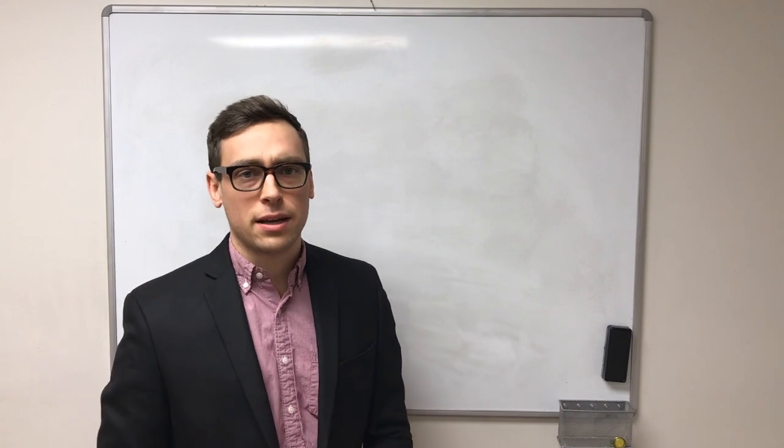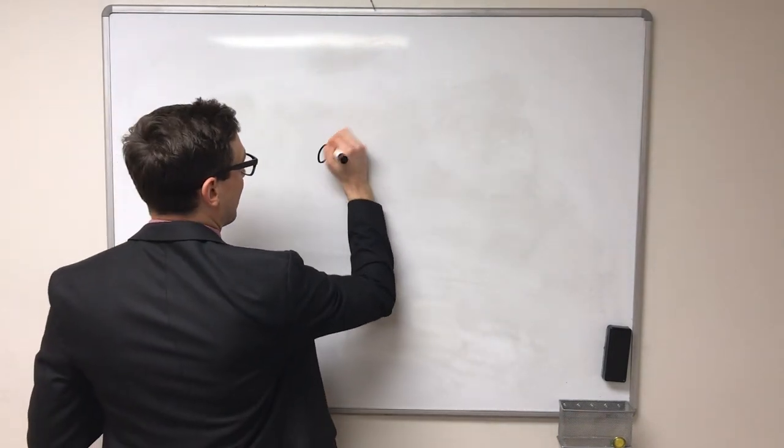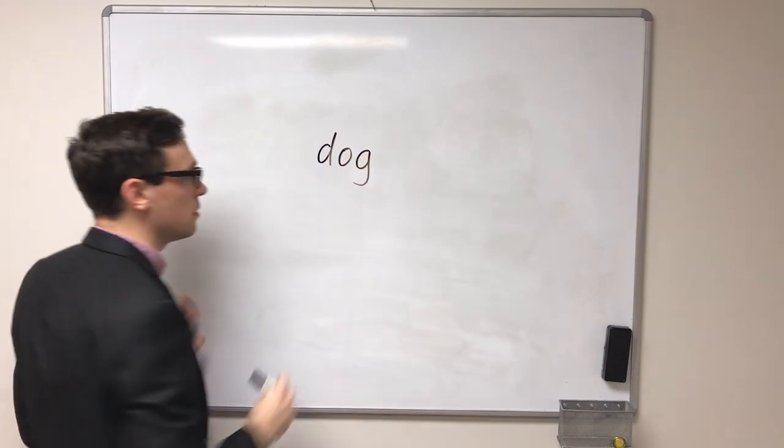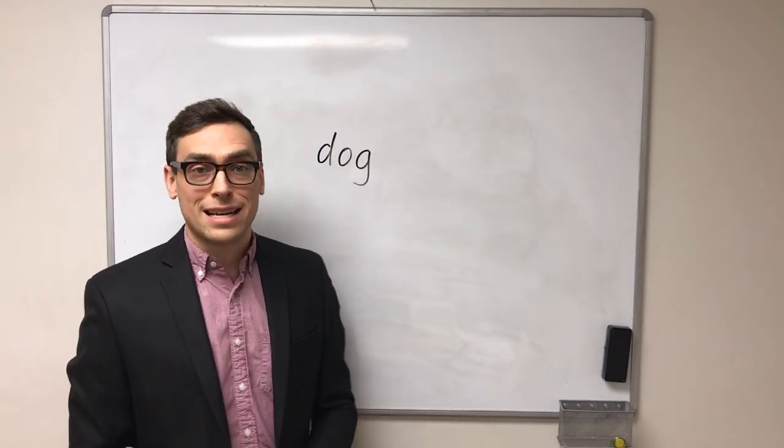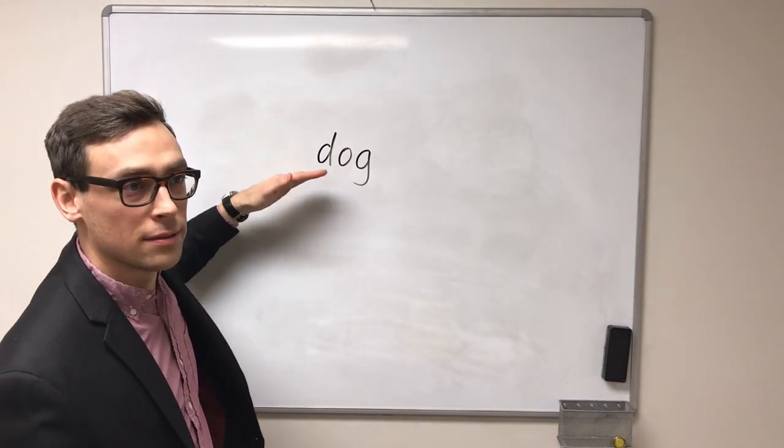So for example, let's take a word in English to determine if English is or is not a tonal language. So we have the word dog. I can say dog very high. Dog. Dog. Dog.